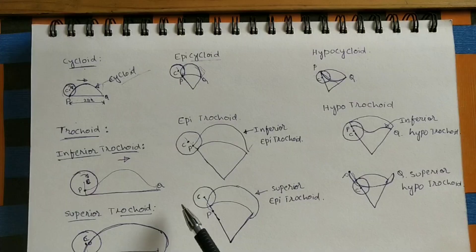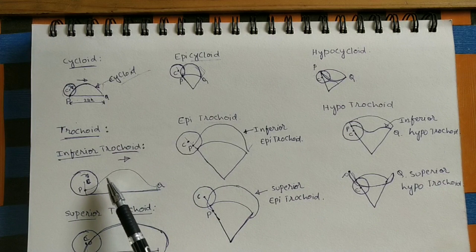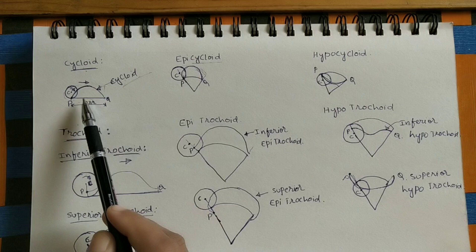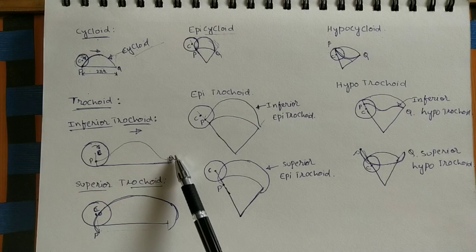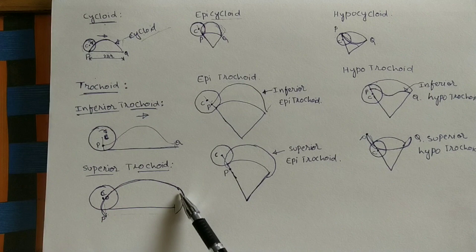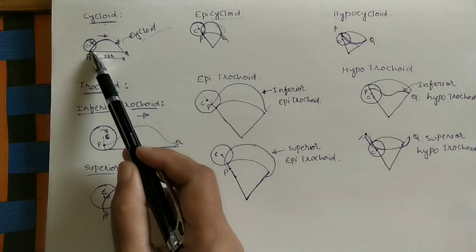In the last class we did the inferior trochoid. Trochoid is also like cycloid. If you are taking the P point instead of on the circumference — if you are taking it inside the circle or outside the circle — if you are taking inside the circle you will get a certain path, if outside the circle a different path. In the last class we did inferior trochoid. So in this class we will do epitrochoid.